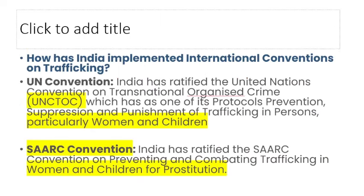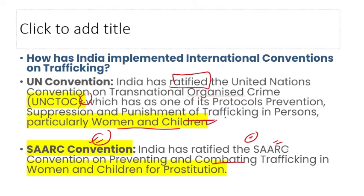International conventions: India has ratified the United Nations Convention against Transnational Organized Crime (UNCTOC), which includes protocols on human trafficking, particularly of women and children. India has also ratified the SAARC Convention — with Bangladesh, Myanmar, Pakistan, Afghanistan, India, Nepal — for combating trafficking in women and children and prostitution.